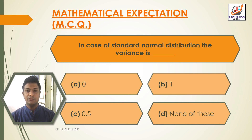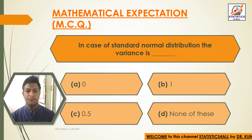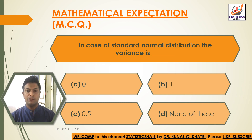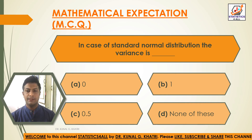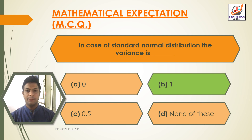In case of standard normal distribution, the variance is: Option A — 0; Option B — 1; Option C — 0.5; Option D — None of these. The answer is Option B: 1. In case of standard normal distribution, the variance is 1.